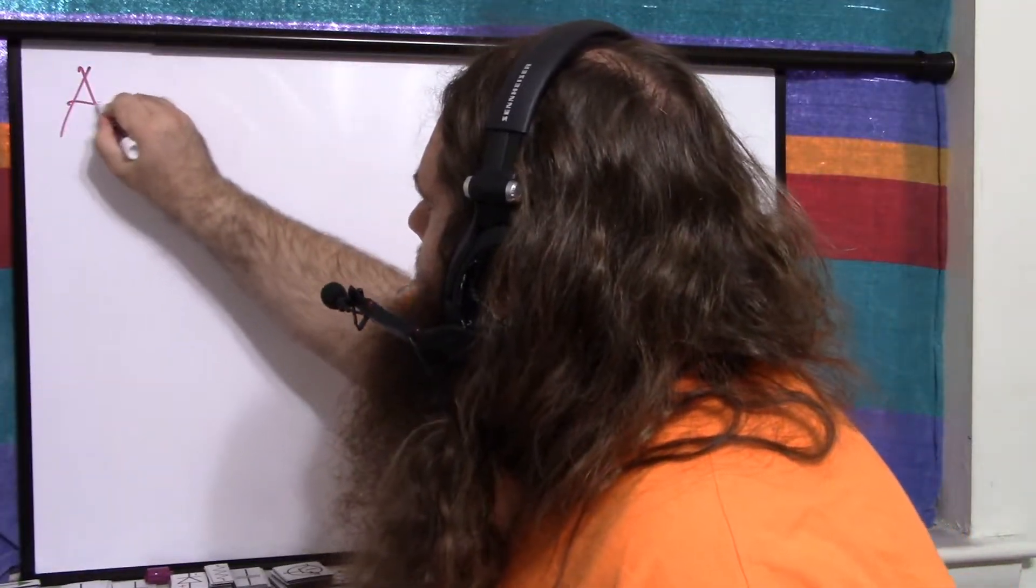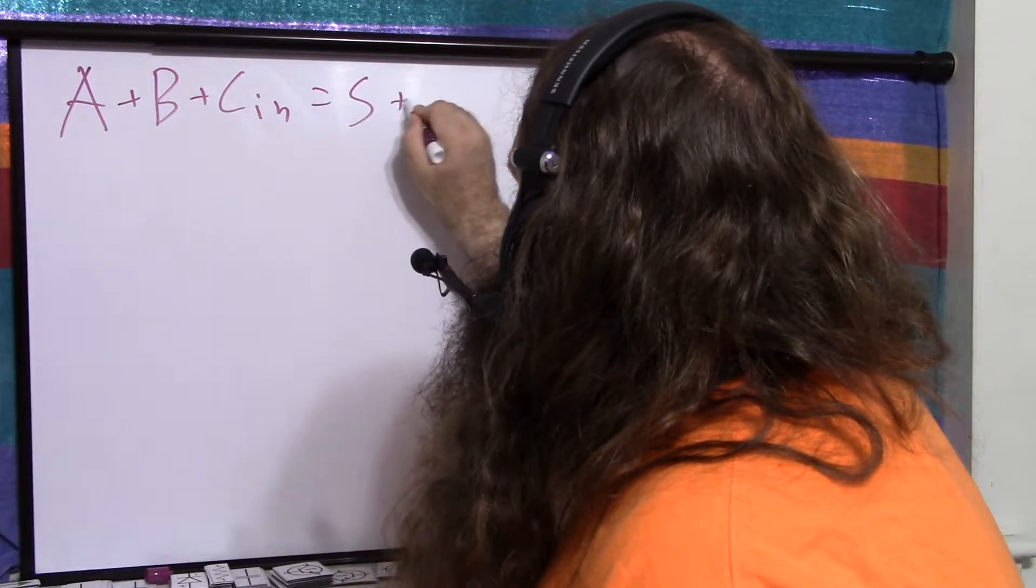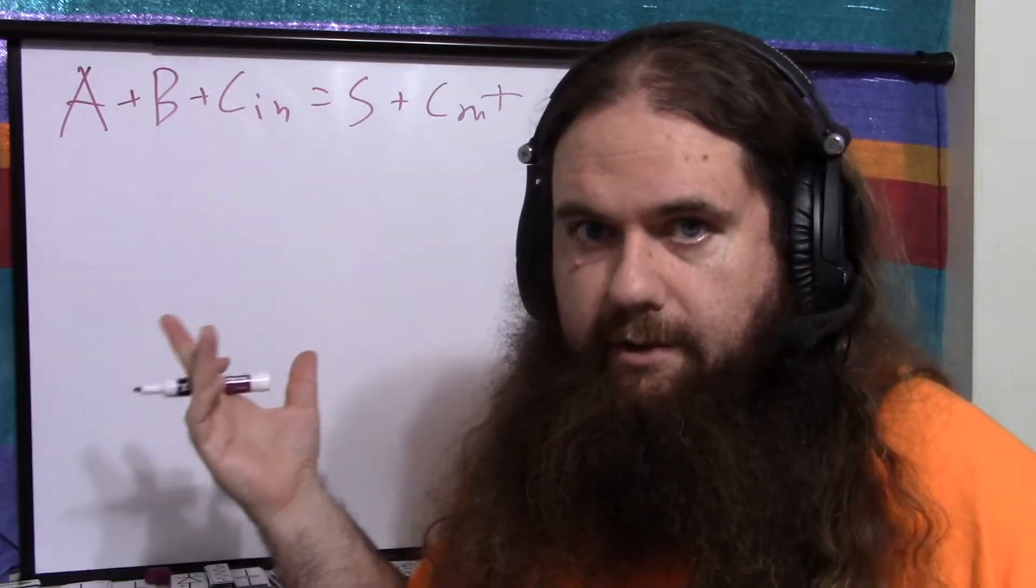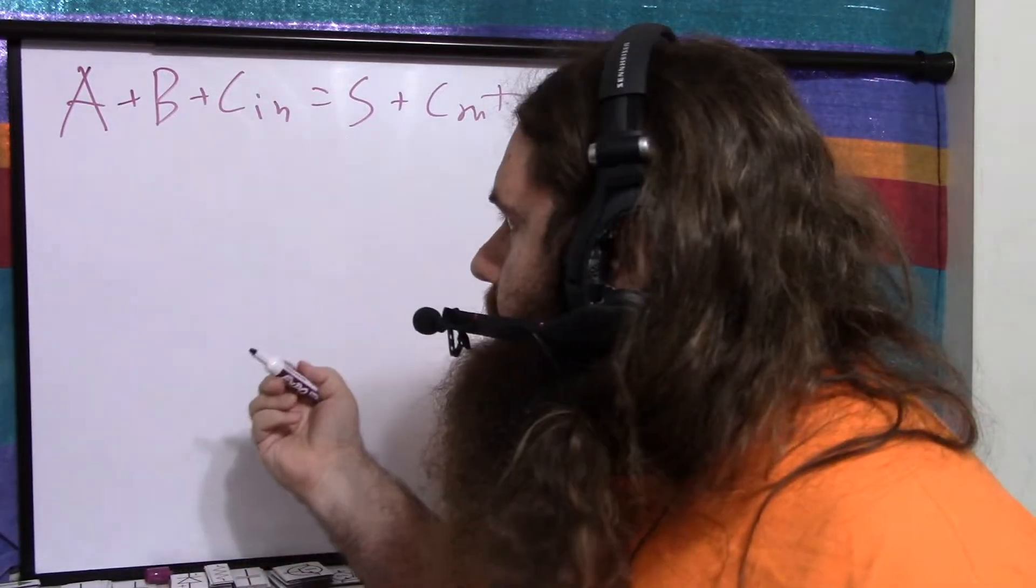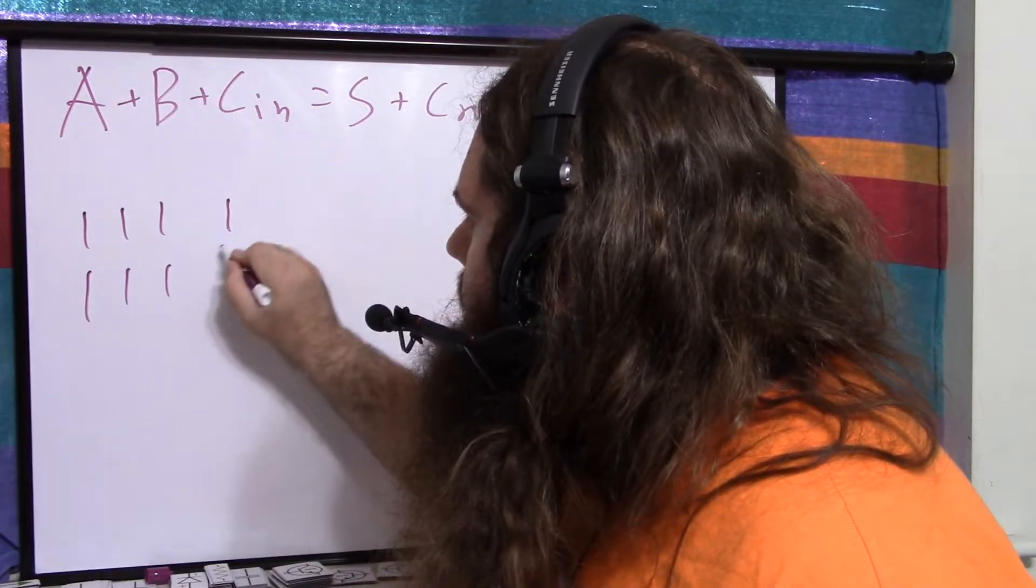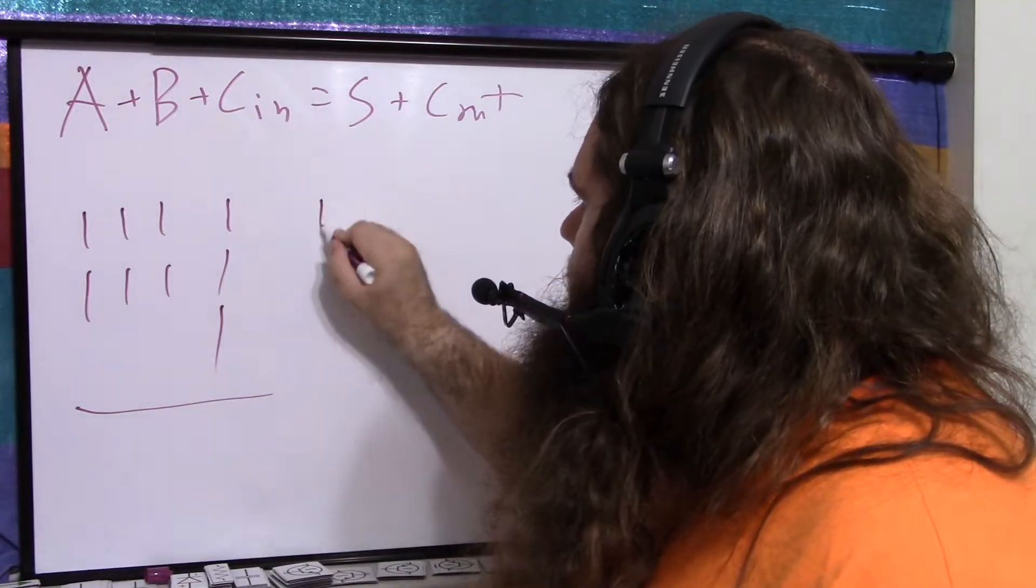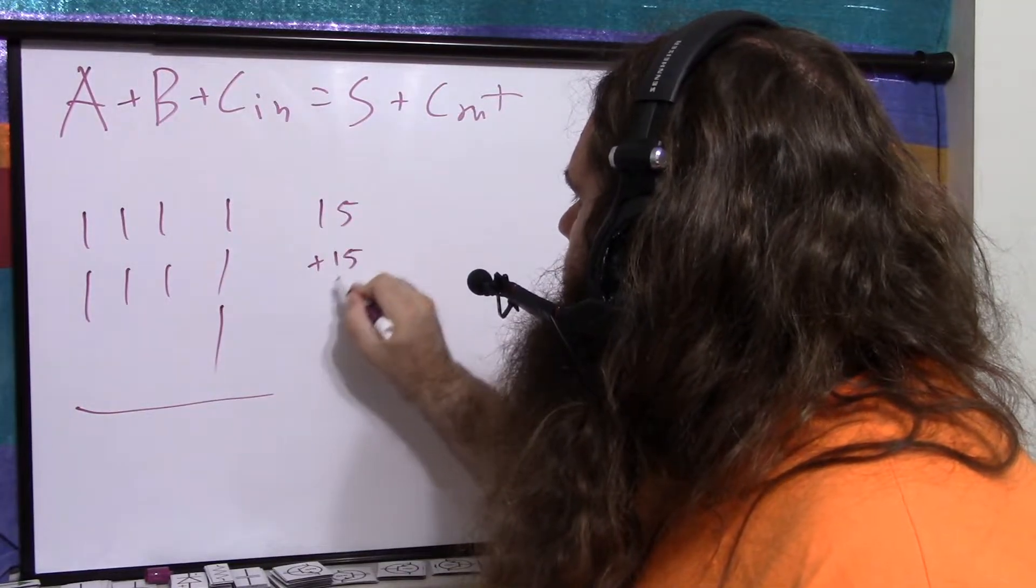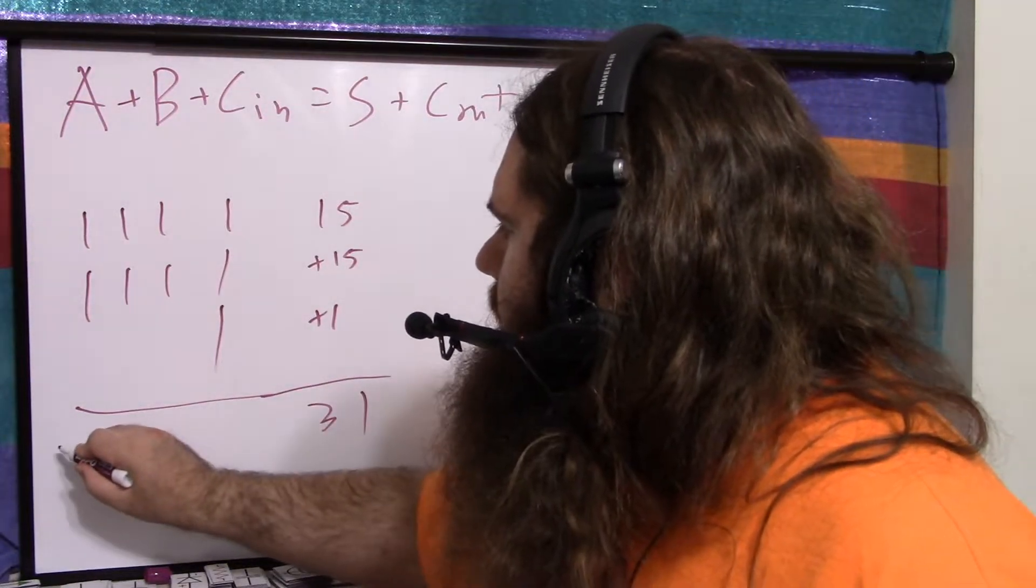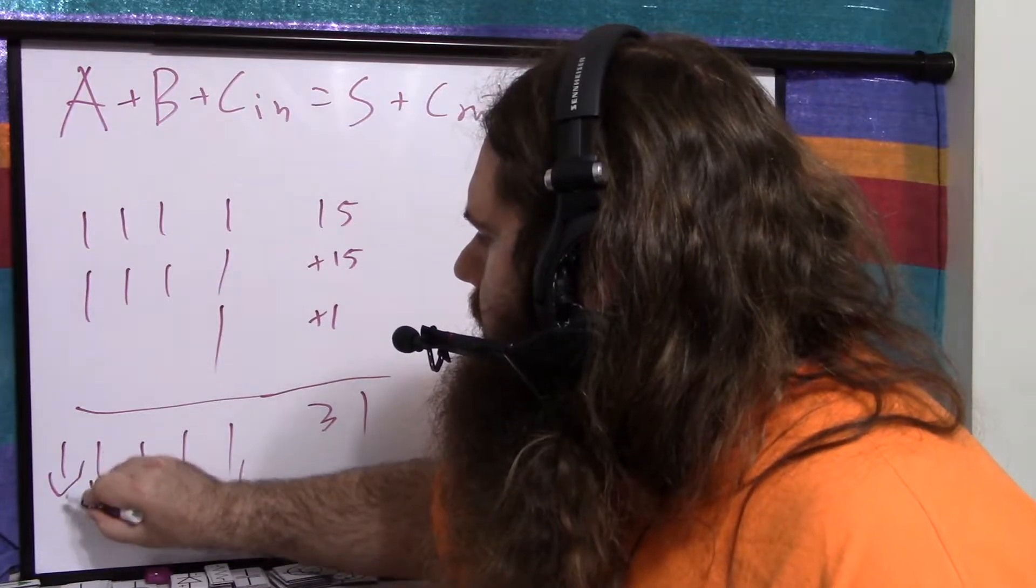So the operation is A plus B plus carry in equals S plus carry out. If we look at the minimum, 0 plus 0 plus 0 equals 0 plus 0, so that's easy. What about the maximum? You could have 1-1-1-1 for A, 1-1-1-1 for B, and 1 for carry in. And what that's going to give you is 15 plus 15 plus 1 equals 31, which ends up being 1-1-1-1-1. And here is S, and here is carry out.